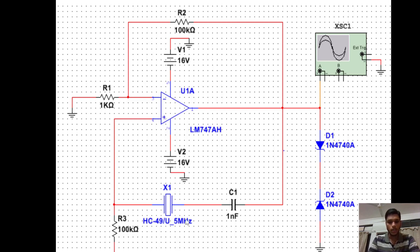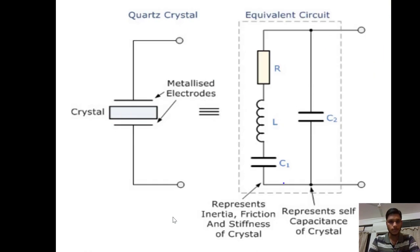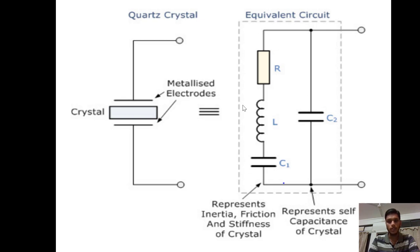Now let me introduce this component. This is an IC which comprises these components. This IC is known as the quartz crystal. You can clearly see this crystal and the metalized electrodes. The equivalent circuit of this IC comprises resistance, inductor, and capacitance, with a capacitance in parallel with these three components.